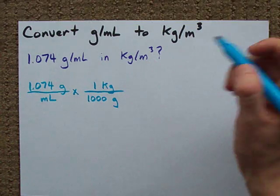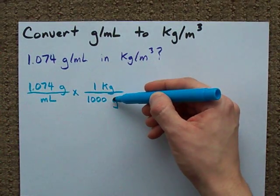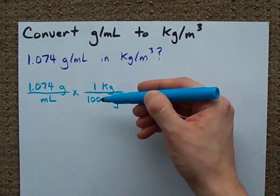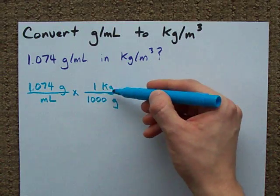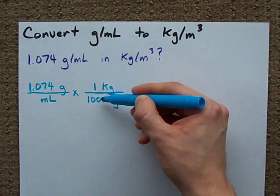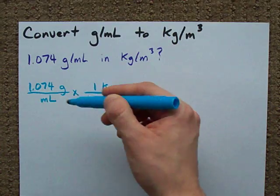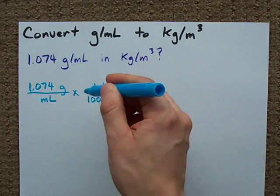Now, first of all, one kilogram and one thousand grams are the same thing. So I'm multiplying by one really here because anything divided by itself is one. Multiplying by one doesn't matter, so this is okay to do.